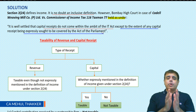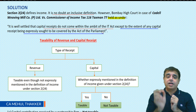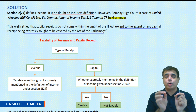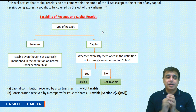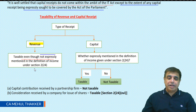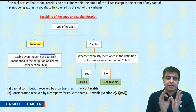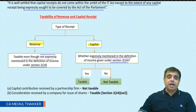The general rule is that a receipt is taxable if it falls within the meaning of income and is chargeable to tax under the Income Tax Act. The exception is that if it is expressly covered in the definition of income, it will be taxable. To check the taxability of revenue versus capital receipt, we need to verify if it is expressly mentioned in the definition of income.